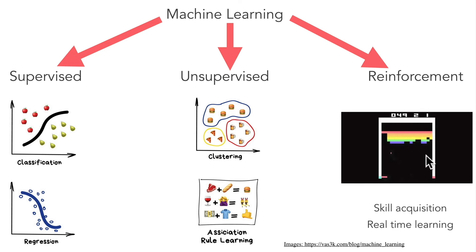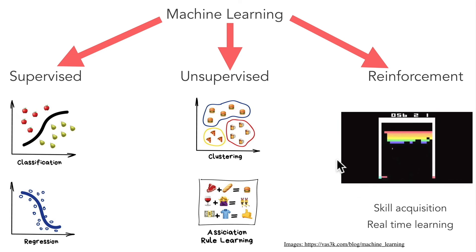Finally, we have the idea of reinforcement learning, which is really interesting because it's all about teaching machines through trial and error, through rewards and punishment. The program simply learns a game by playing it millions of times until it gets the highest score. It doesn't know what it's doing at first, but then it tries to maximize the score and eventually figures out that maybe it should move where the ball is coming. This is seen in skill acquisition and real-time learning, and you see it a lot in machine learning programs that play, for example, video games.